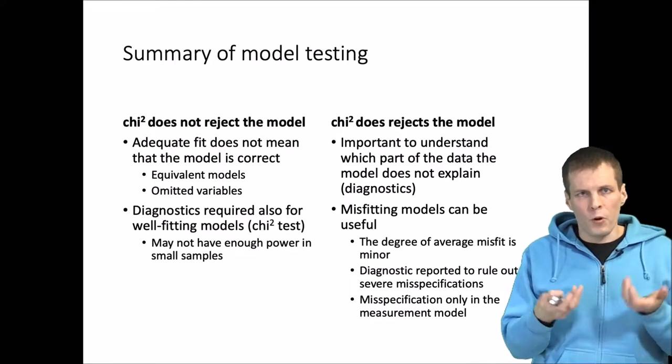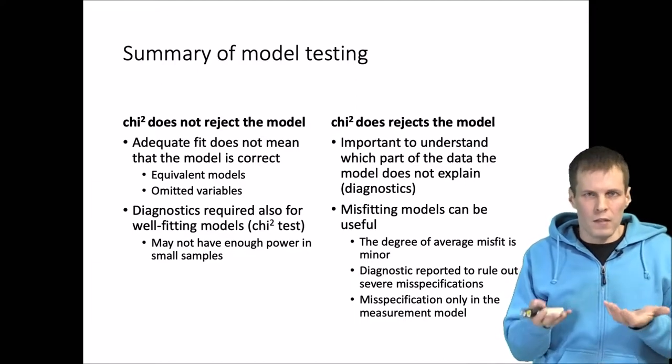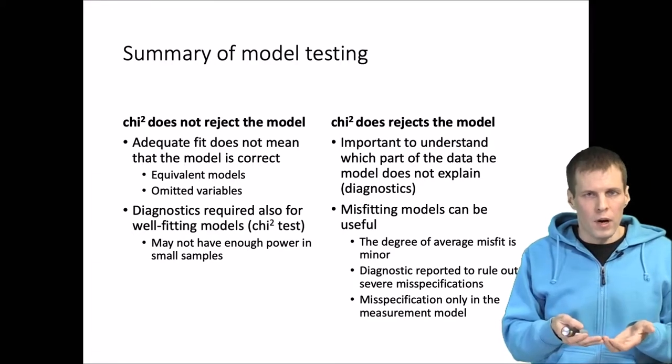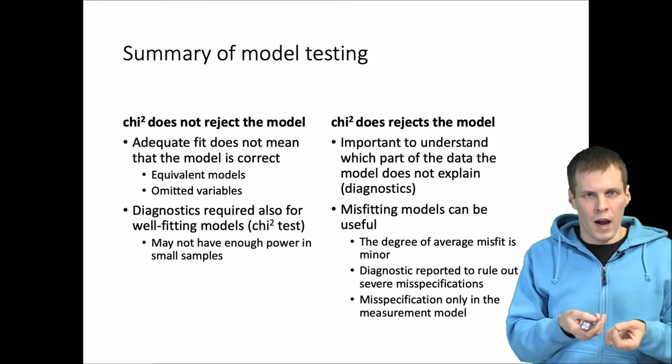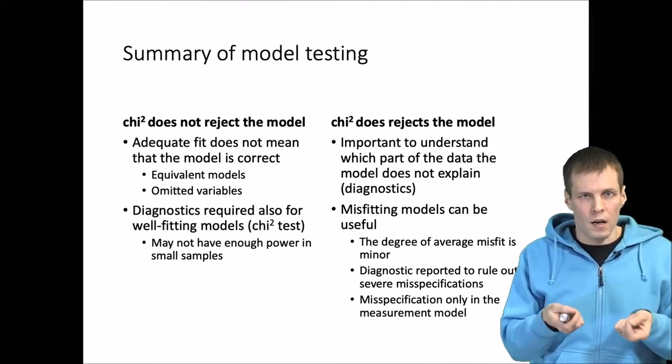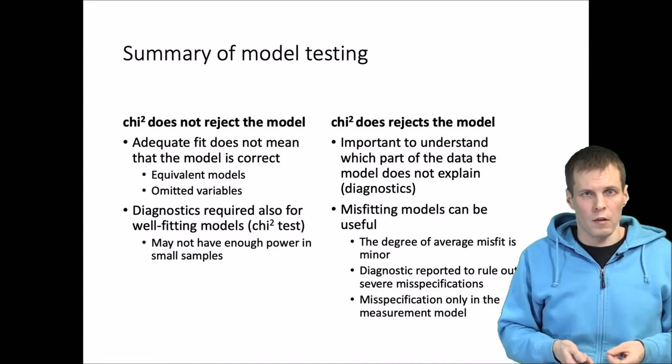Finally, you should make sure that you are confident that the misspecification only influences your measurement models or how your measures work. Measures rarely work perfectly and we need to have some degree of tolerance for imperfect measures. But if the relationships between the variables that represent your theory, if those are incorrect, that kind of mistakes should not be tolerated in published research.